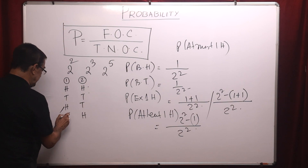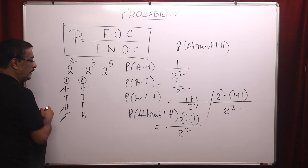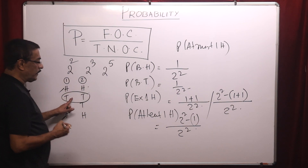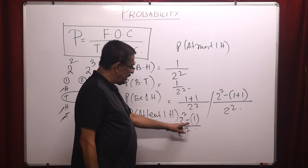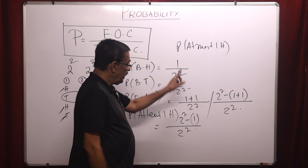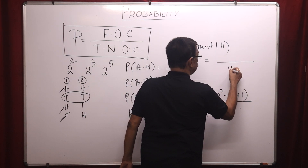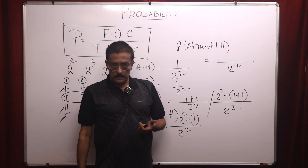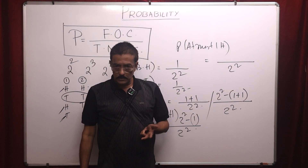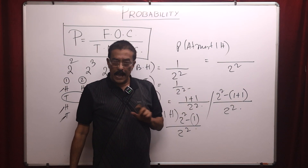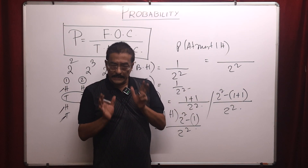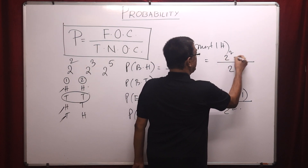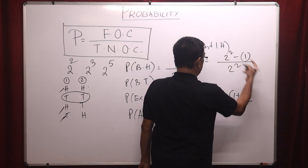For at least one head: I can consider one head or two heads. The only case I cannot consider is both tails, so total value minus the one case I cannot consider gives the favourable outcomes. Be very careful about reading the problem correctly.